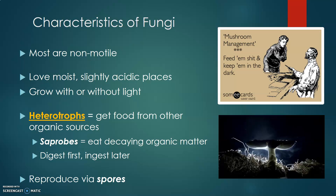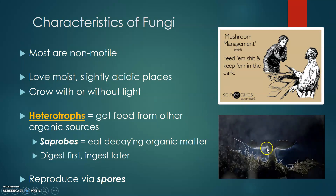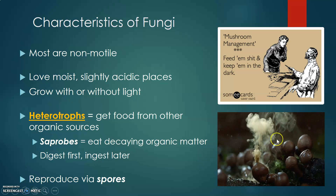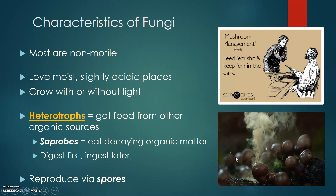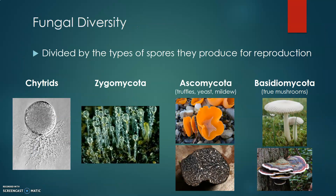Fungi reproduce via spores. You can see spores — which look like a kind of dust — being released from the underside of this mushroom, as well as in these puffball mushrooms in this picture. Generally, we divide fungi into types based on the kind of spores they use for reproduction. You can see some different classifications of fungi here. What I want you to appreciate is not the names of these specific groups, but the fact that fungi can be really diverse and are mainly classified by how they reproduce.